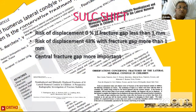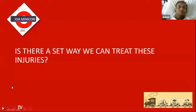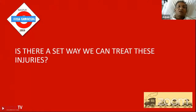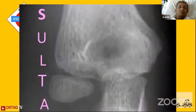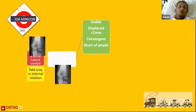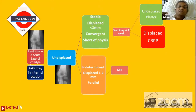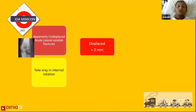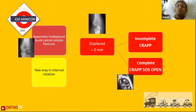There is an algorithm: take X-ray in internal rotation, look at the fracture. If displaced more than two millimeters, or if the fracture line is divergent or parallel on the lateral, those are unstable fractures which need fixation. If none of those signs are present, treat conservatively in plaster. At one week, take an X-ray — if not displaced, continue conservative treatment.